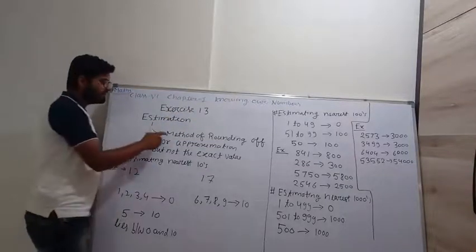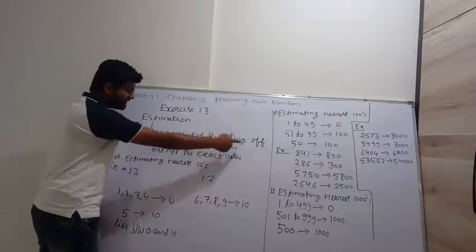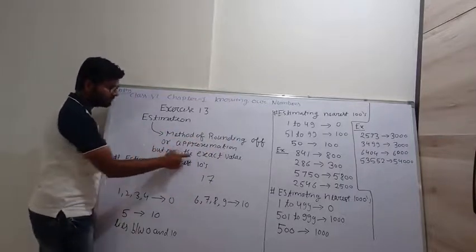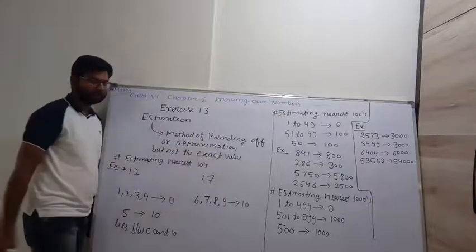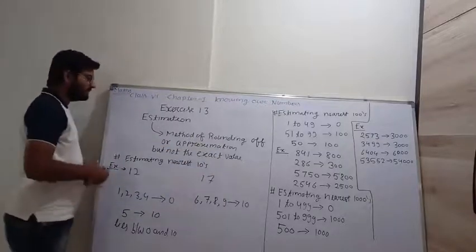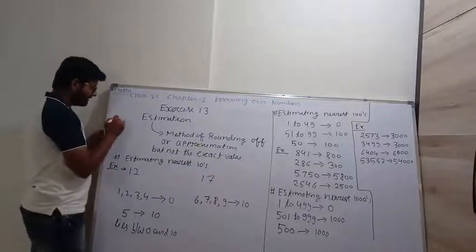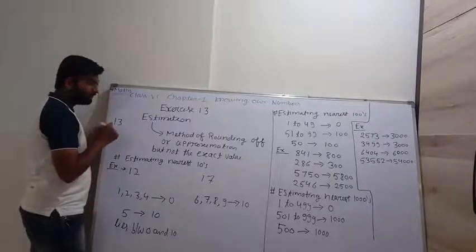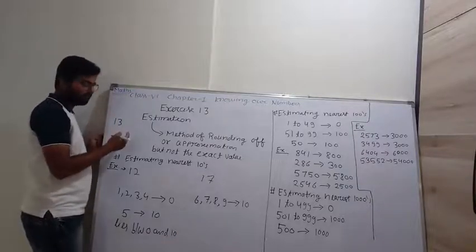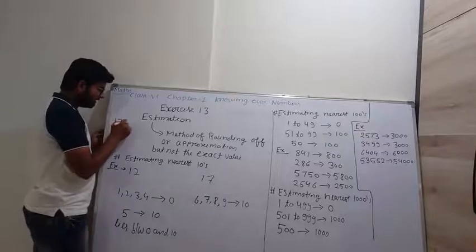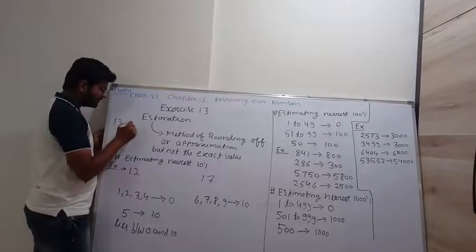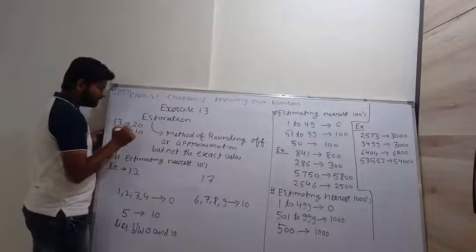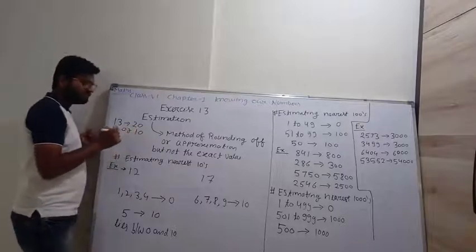Estimation is the method of approximation, but not the exact value. That means if we have a number like 30, we have to round it out. So we can round it to 20 or round it to 10.